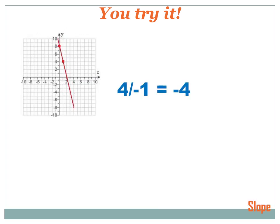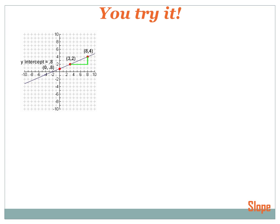I have two points on this line and I'll use rise over run. Starting at one point, I go up one, two, three, four — rise is positive four. The run is just one to the left, which is negative one. So my slope is four over negative one, which is minus four.